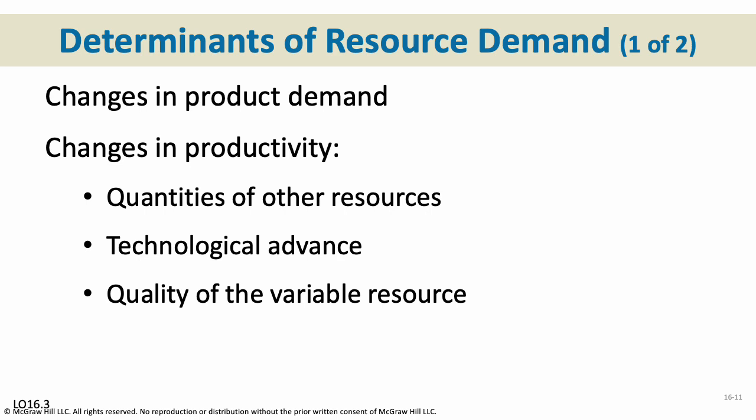Changes in productivity are another determinant. First, quantities of other resources: depending on whether we can replace one resource with something else — a better metal or a cheaper alloy — that can change our resource demand. For example, if we used to make cans out of aluminum but some other alloy costs half as much and makes just as good cans, that's a change in productivity through quantities of other resources.